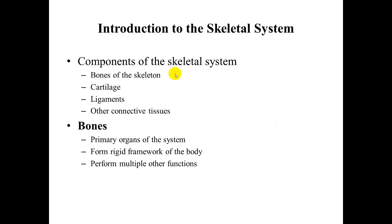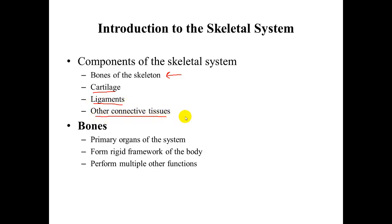The components of the skeletal system include bones as the first component, but also cartilage and ligaments — where ligaments attach bone to bone — along with some other supportive connective tissues.